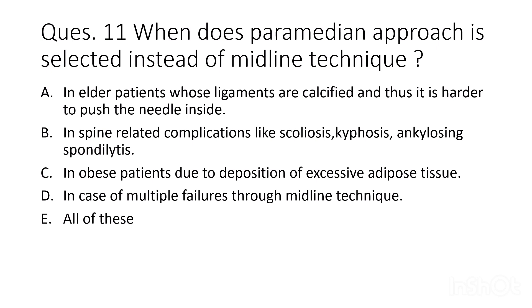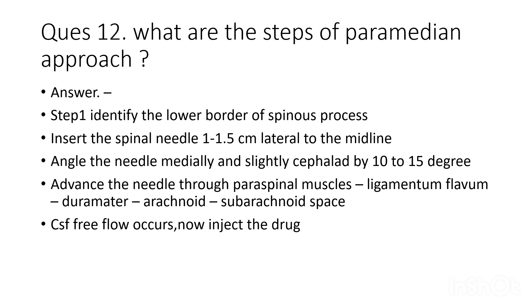Eleventh question: when is the paramedian approach selected instead of the midline technique? Options are: in elderly patients whose ligaments are calcified, in spine-related complications like scoliosis, kyphosis, or ankylosing spondylitis, in obese patients due to excessive adipose tissue deposition, in case of multiple failures through midline technique, or all of these. The correct answer is all of these.